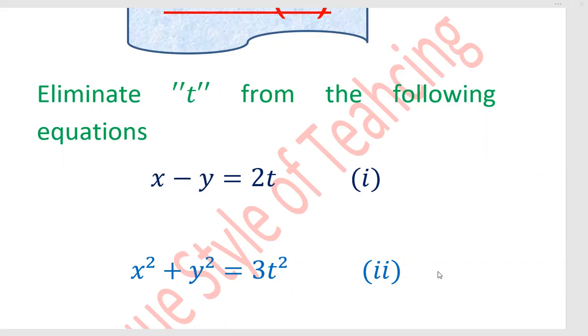We need to eliminate t, so from equations one and two, we will find the value of t. After finding the value, we will equate them. Automatically, t will be finished.